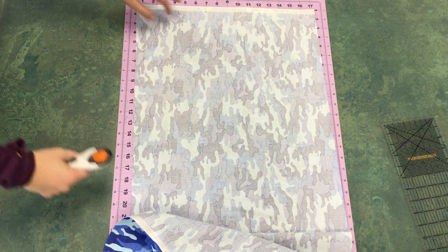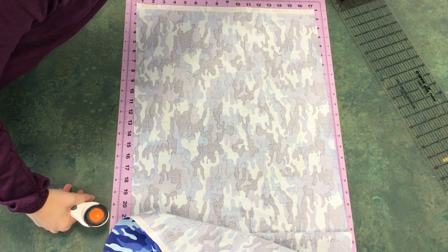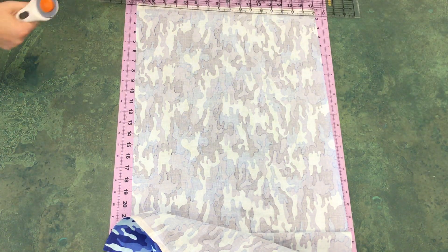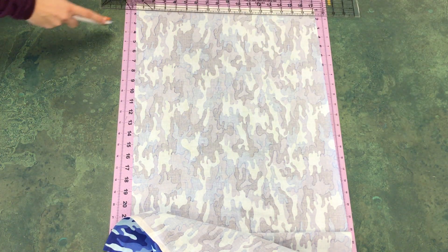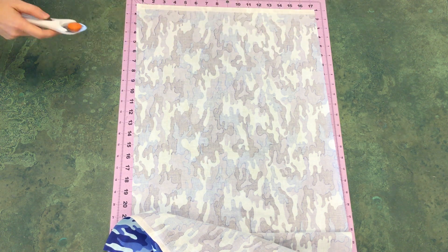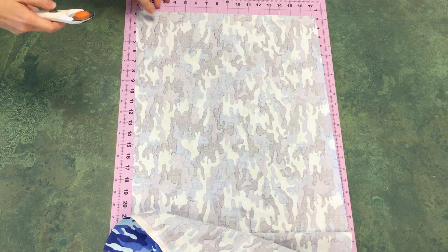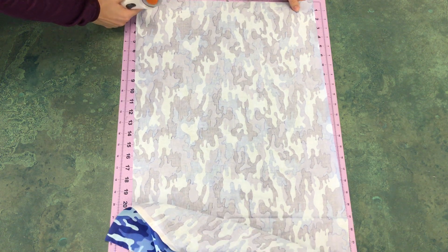This part is something that we do not want to include in any of our projects. So the first thing that I want you to do is to cut that off. Use your straight edge and a rotary mat to cut that off.